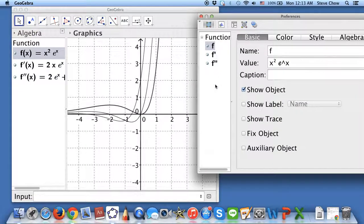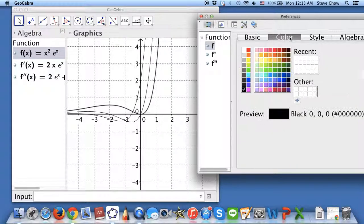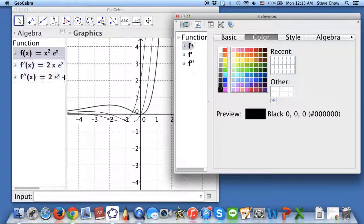Anyways, let me choose the first function, like the original function. Let me go to color. This is where we are going to change the color of the function. For the original, let me just do it in black.